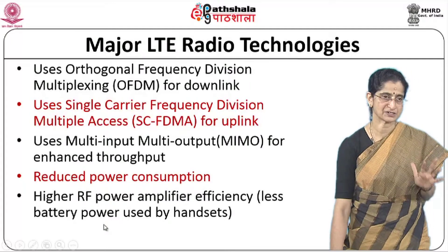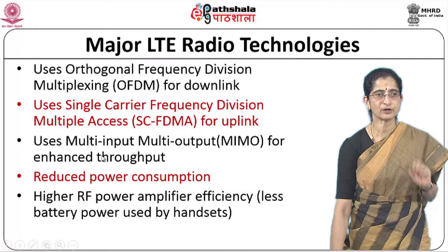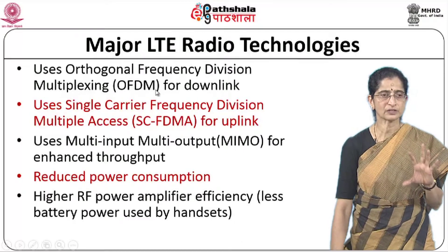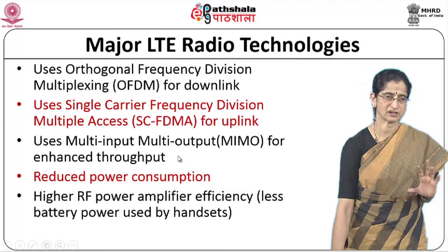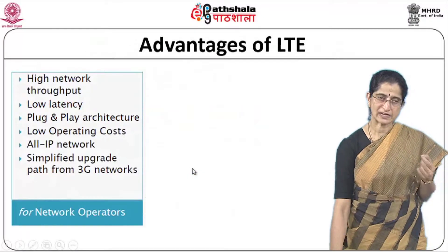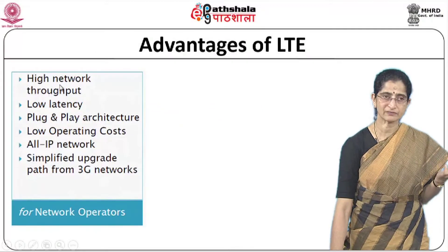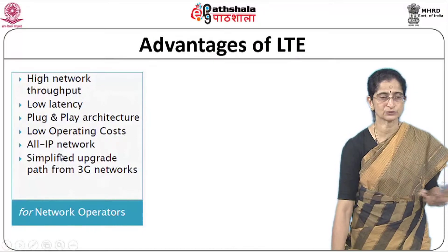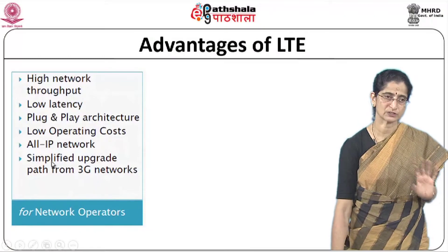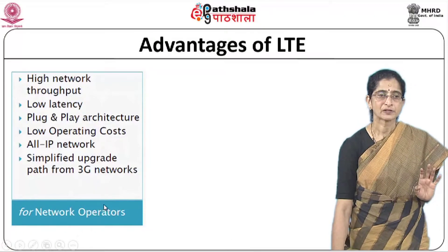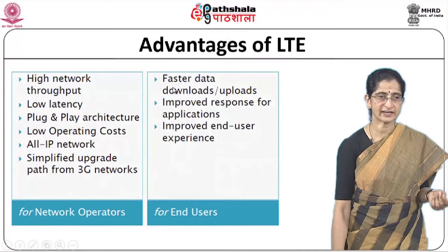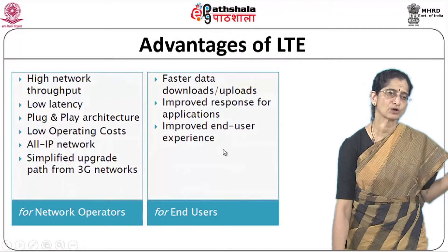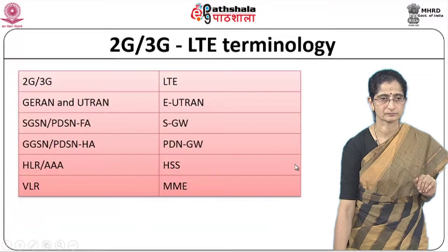Power consumption is reduced in LTE, with higher RF power amplifier efficiency and less battery power used by handsets. Advantages for network operators include very high network throughput, low latency, a plug-and-play architecture, low operating costs, and an all-IP network — providing a simplified upgrade path from 3G networks. For end users, the advantages are faster data downloads and uploads, improved application response, and an overall improved end user experience.